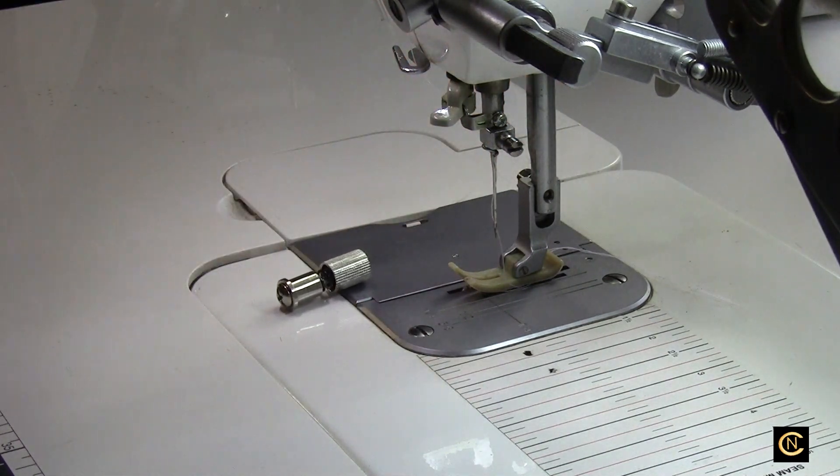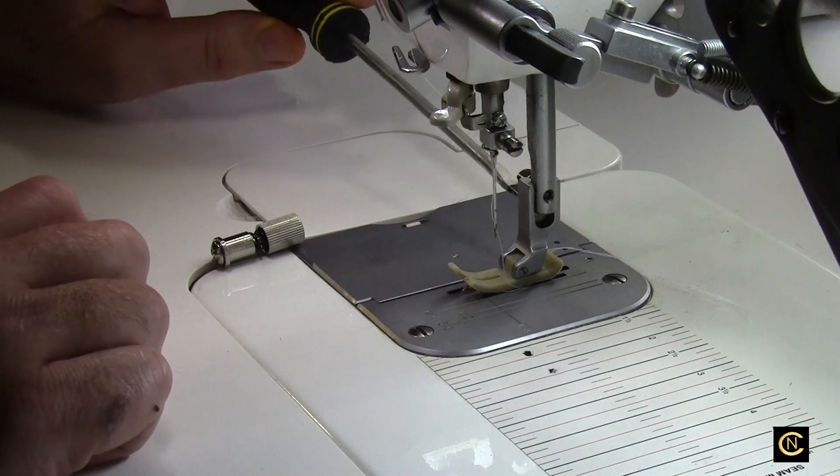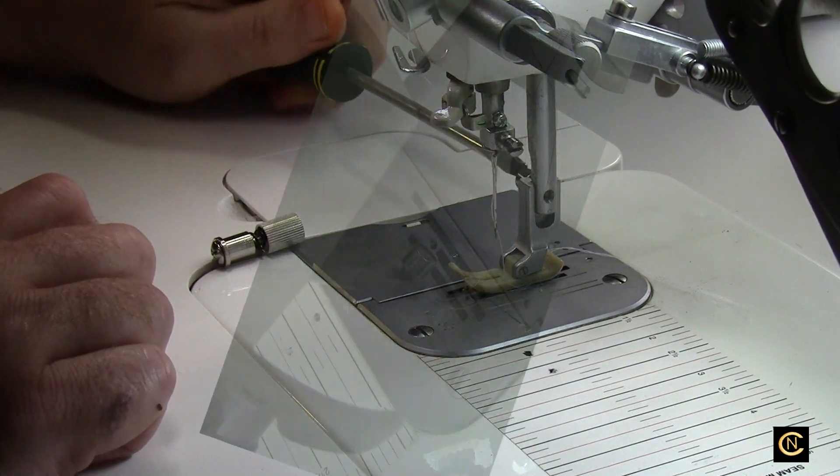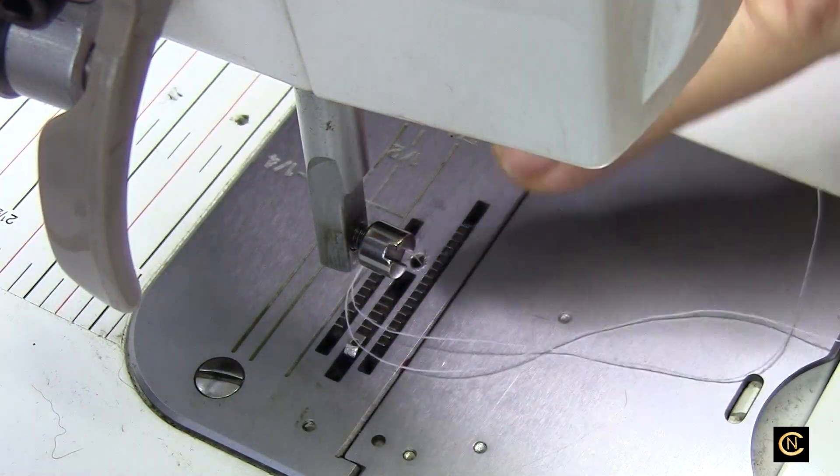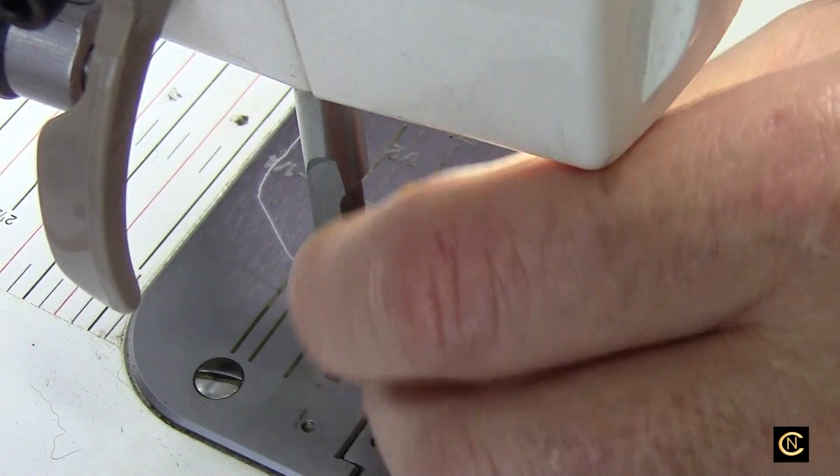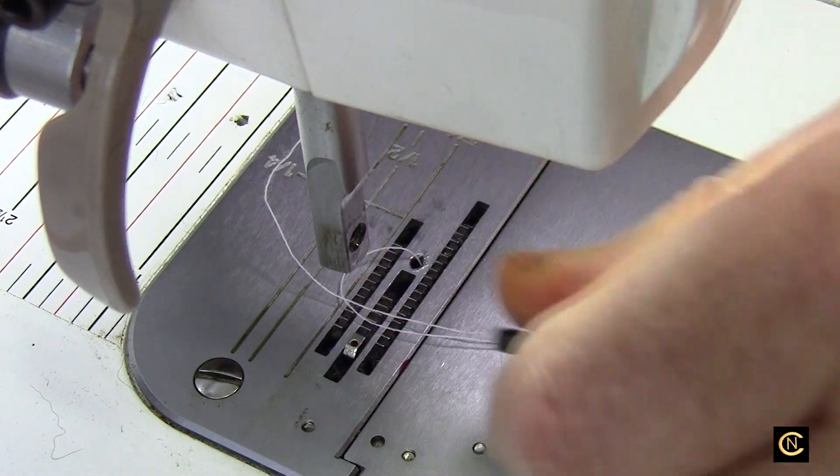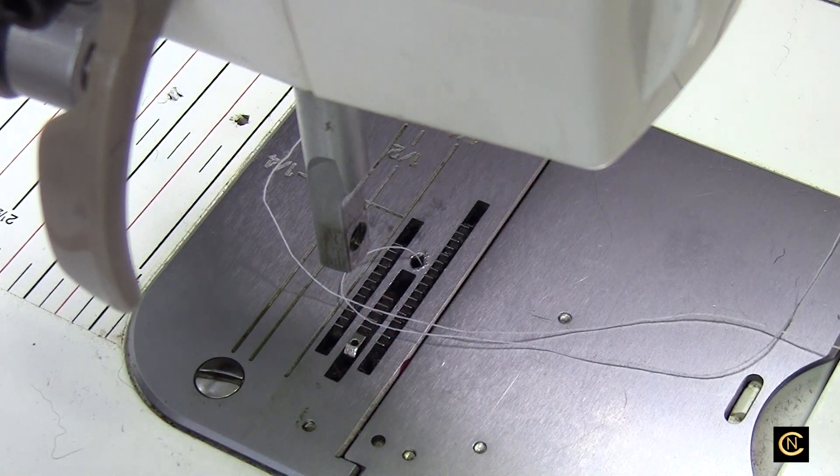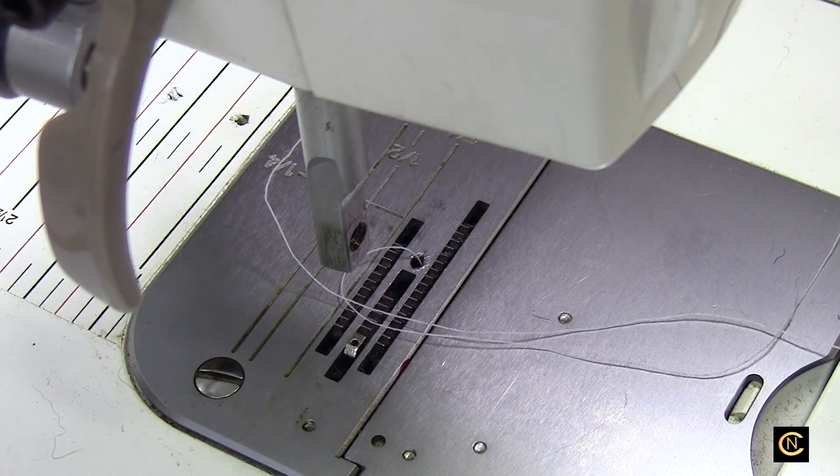Now let's replace the foot that's on here with this. The first thing you want to do is remove your needle, then remove the screw that came with your machine and put that in your little magnetic pin cushion so you don't lose it.